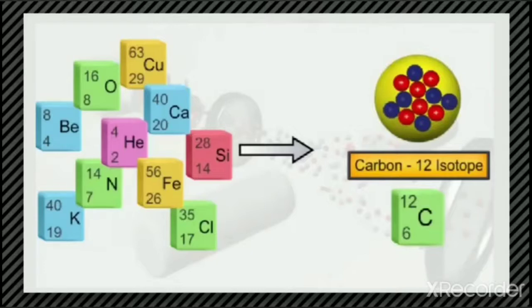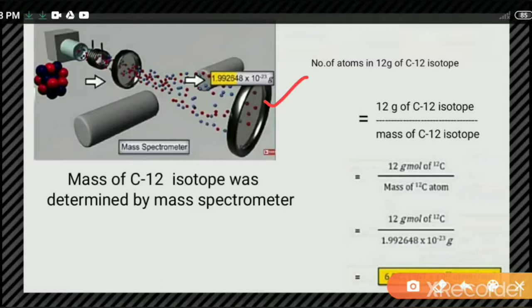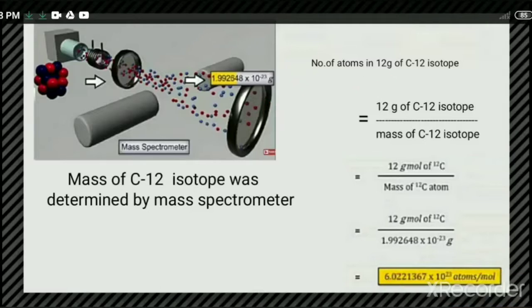Just as in determining atomic mass the C-12 isotope is taken as standard, similarly in finding out the number of particles for different elements, the C-12 isotope is taken as standard. To determine this number precisely, the mass of a carbon-12 atom was determined by a mass spectrometer and found to be equal to 1.992648 × 10⁻²³ grams. From this value we can find the number of atoms: 12 grams divided by the mass of the C-12 isotope gives a value of 6.02213 × 10²³.